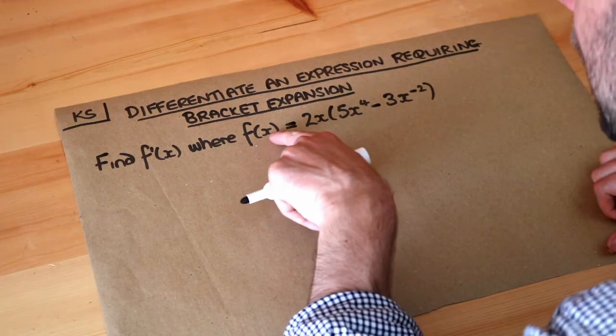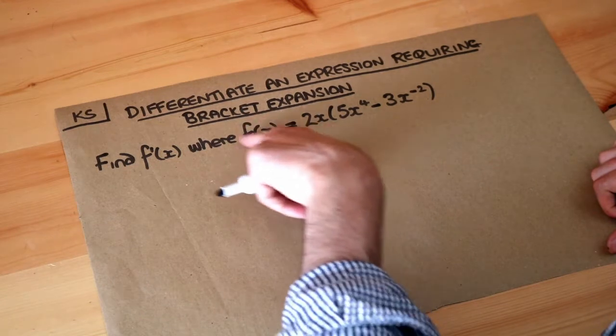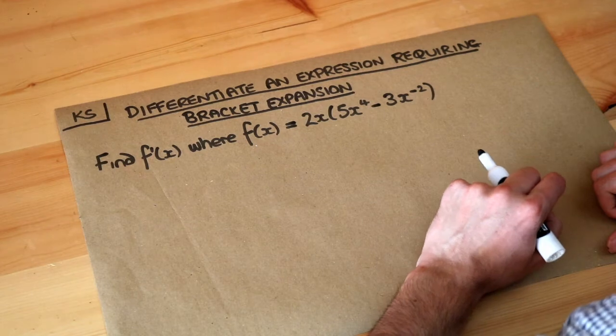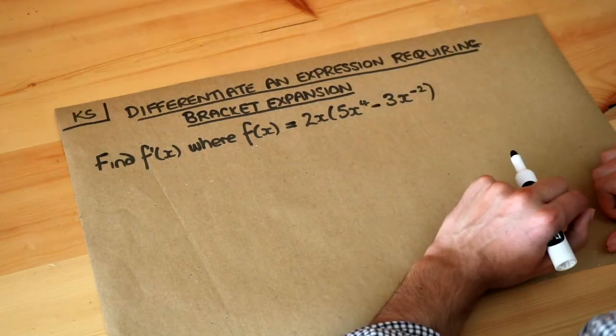Now if we've got this original function f(x), then we want to find the gradient function. Remember if we've got functional form like here f(x), then the gradient function is f'(x) as we call it. All we need to do if you have an expression like this with brackets is just expand out the brackets first.